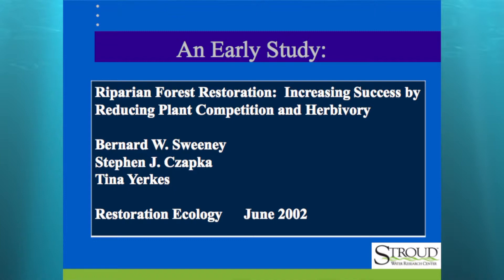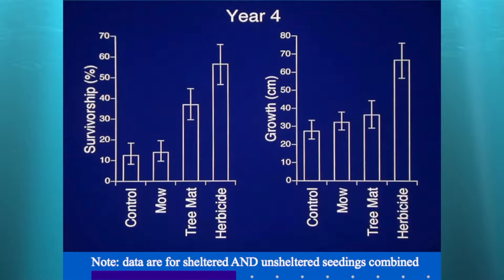Out of that study: survivorship on the left side, growth on the right. Four different treatments: control (doing nothing), mowing (twice-a-year weed whacking with a string trimmer), tree mat (three-foot by three-foot black weed mats), and herbicide (twice a year, three-foot diameter spot). The herbicide spots were really getting it done. A quick note: the glyphosate formulation matters — Roundup has a surfactant, Rodeo does not. They're both glyphosate, it's just whether there's a surfactant.